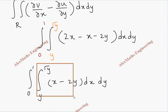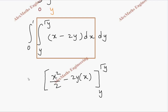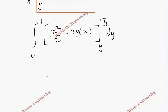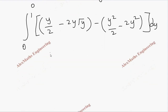Evaluating the inner integral with respect to x: integration gives x²/2 minus 2y·x, evaluated from y to √y. Substituting the upper limit √y gives y/2 minus 2y·√y, and substituting the lower limit y gives y²/2 minus 2y². Simplifying: y/2 minus 2y^(3/2) minus y²/2 plus 2y². This reduces to y/2 minus 2y^(3/2) plus 3y²/2.